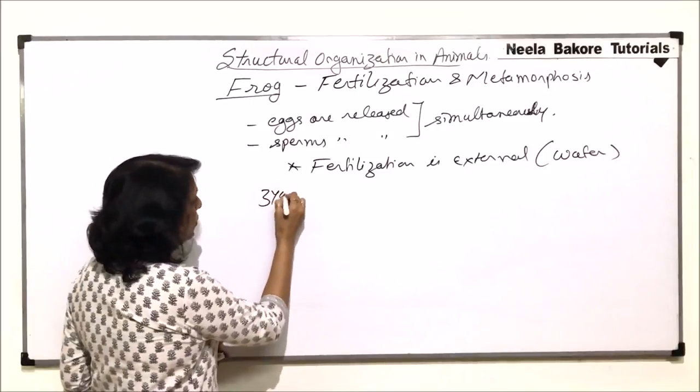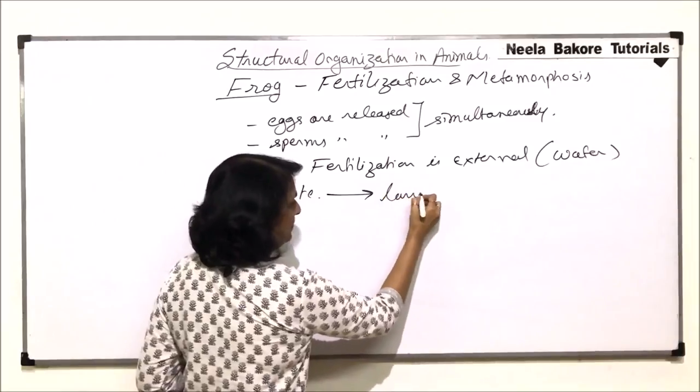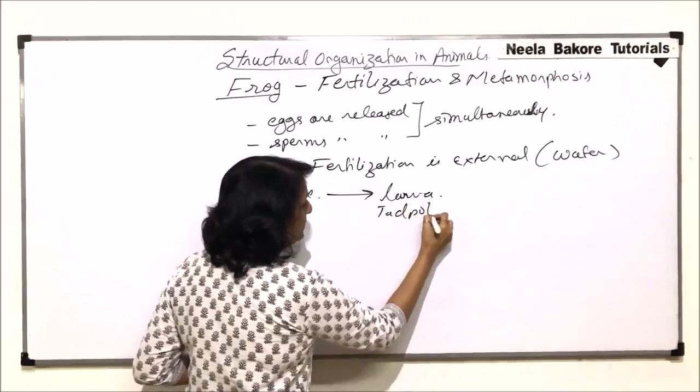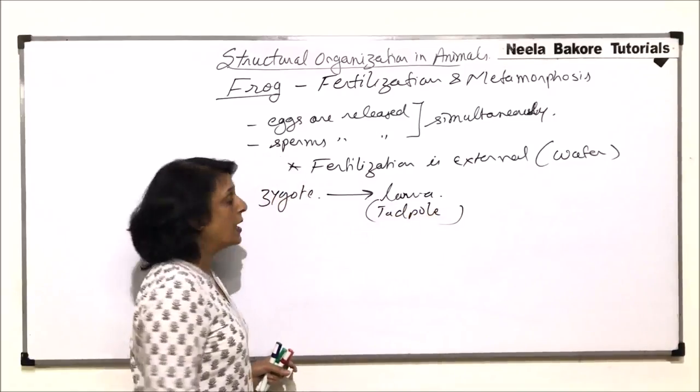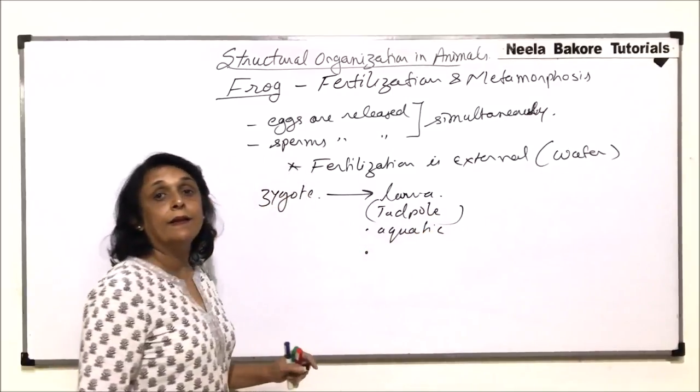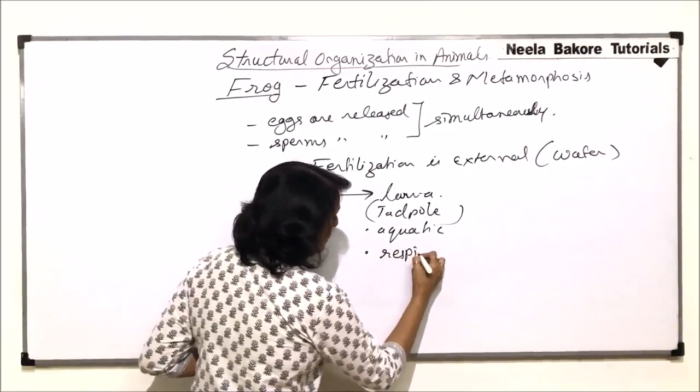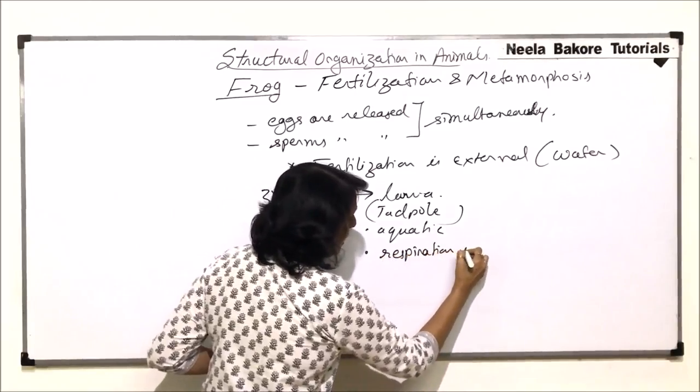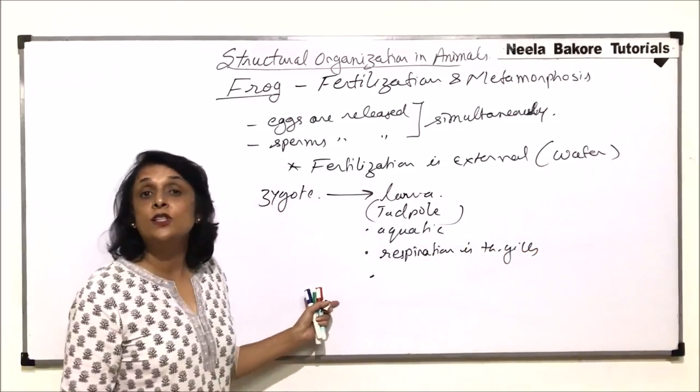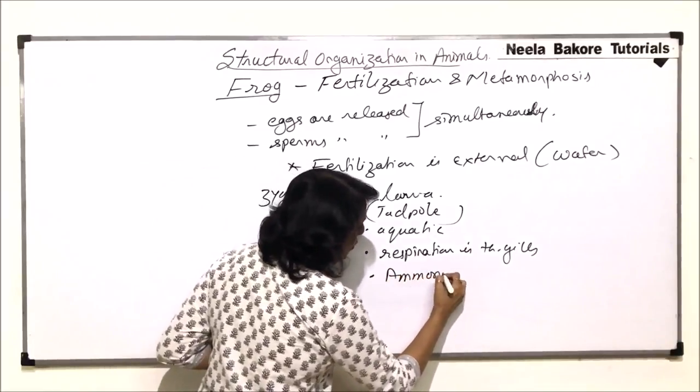Now from the zygote, what hatches is a larval stage and the larva is known as tadpole. Tadpoles are aquatic and the respiration in case of tadpoles is through gills. And the waste which they eliminate is ammonia, so that means they are ammonotelic.